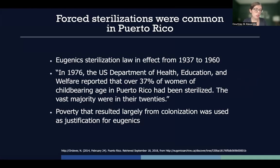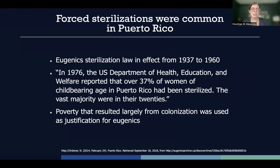Surgical sterilization — a procedure that prevents a person from reproducing — was a key tool of the eugenics program throughout the United States. Sterilization techniques included a hysterectomy, tubal ligation, and vasectomy. Sterilization programs were underway in many places by 1937, including Puerto Rico and other U.S. territories. Under Law 116, one-third of women in their 20s were sterilized in Puerto Rico, according to a report from the United States Department of Health, Education, and Welfare.